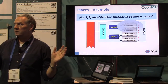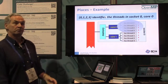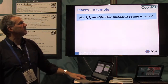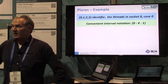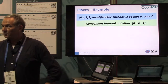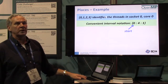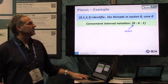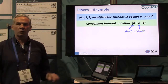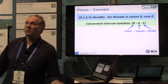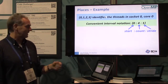You get all the freedom you want — you can come up with very different configurations. So that place defines all the threads in socket zero, core zero. These lists get very long, so there's a very convenient interval notation: for example, 0:4:1 means starting number zero, count four, stride one — giving you 0, 1, 2, 3. The key to remember is this is the count, not the last element. You'll be using this all the time because these lists get really long.